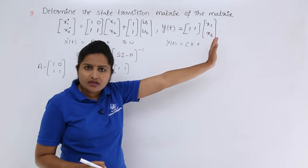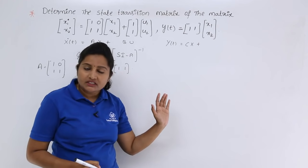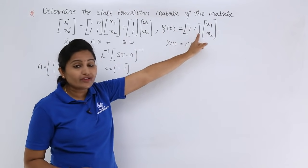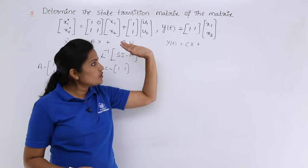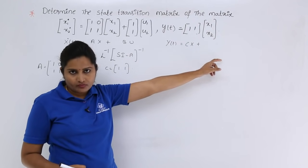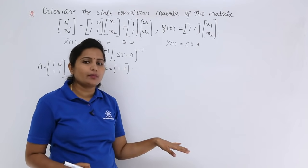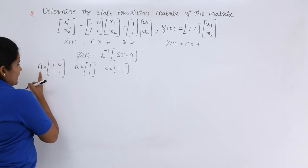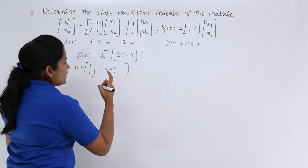Looking at the given model, this is a multi-input, single-output system. Y(t) has only one output line — it is not a 2×2 matrix. This analysis for multi-input, multi-output can also be applied to multi-input, single-output systems. So A, B, and C values are as given according to our model.